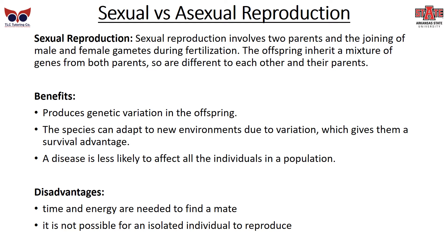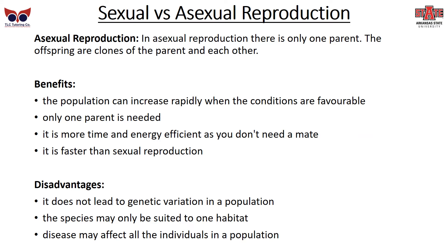It's not possible for an isolated individual to reproduce sexually — if you have one parakeet, you can't get more unless you find it a mate. Asexual reproduction involves only one parent, and the offspring are functionally clones of the parent and of each other. The population can increase rapidly when conditions are favorable, and it is more time- and energy-efficient. However, it does not lead to genetic variation within a population, the species may only be suited for one habitat, and because all individuals are clones, a disease could affect the entire population at the same time.